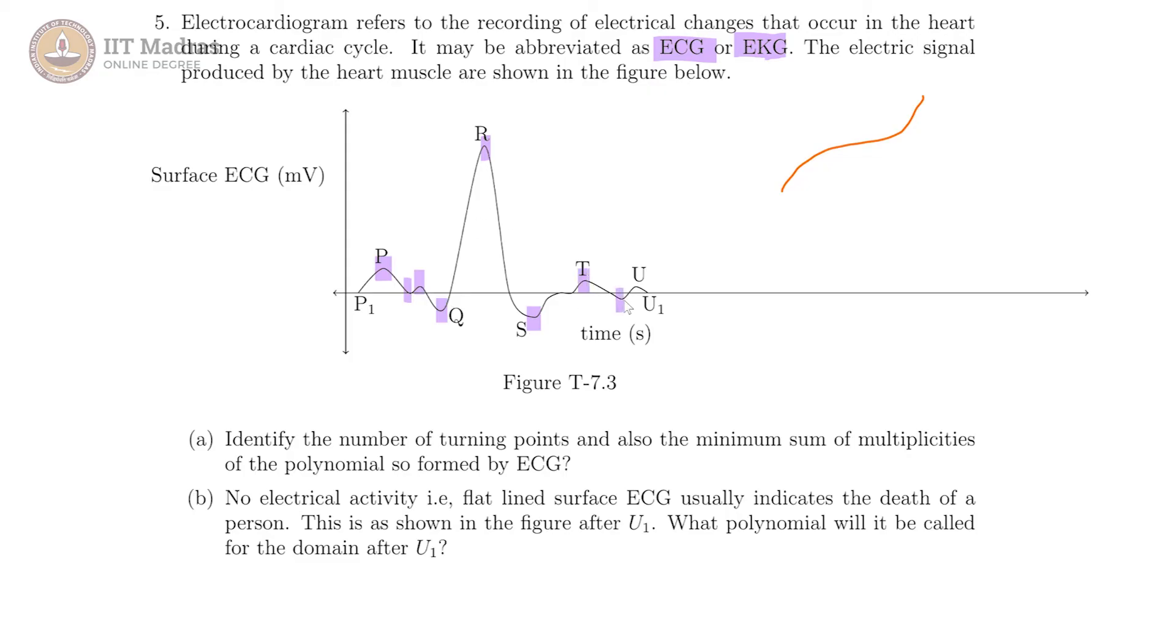So this is 7, 8, and 9. That means we have 9 turning points. And then they are asking for the minimum sum of multiplicities.